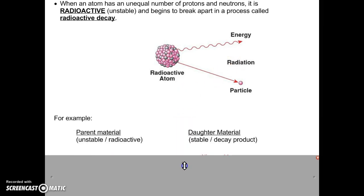For example, carbon-14. Carbon-14 is unstable or radioactive. It will decay into nitrogen-14, which is stable.